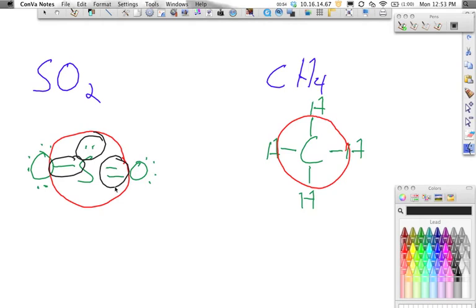That double bond is sitting right there and that's an area of electron concentration. So here, we only have three charged clouds. Of those charged clouds, only one of them are dots, so only one is a lone pair.